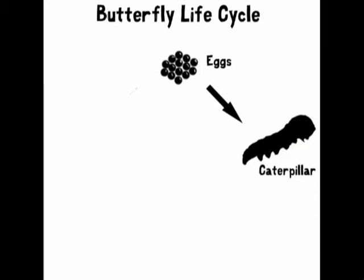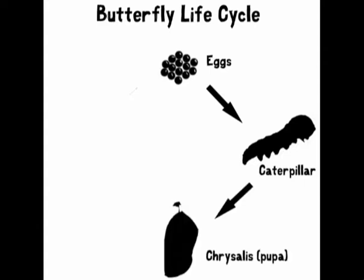After a few weeks of this, the caterpillar sheds its skin and becomes a pupa. The hard outer shell the pupa is in is called the chrysalis. It's in here that the butterfly makes its most noticeable changes.